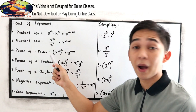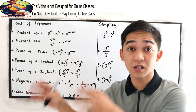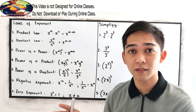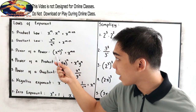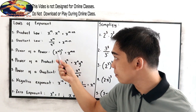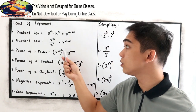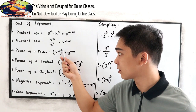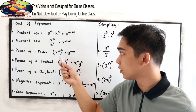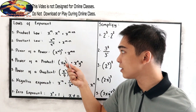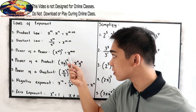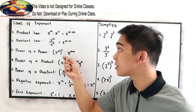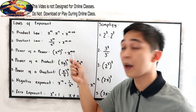Power of a power — power is another term for exponent. So, x raised to m, raised to n: we have two exponents. That gives us x as the base, and we simply multiply m times n, giving us x raised to mn.